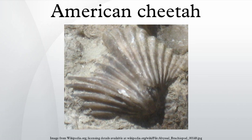The American cheetah developed cheetah-like characteristics through convergent evolution, but it is most closely related to the Puma and not to the modern cheetah of Africa and Asia. The supposed American origin of the modern cheetah is thus equivocal. However, it is believed to have evolved from cougar-like ancestors, whether in the Old World or the New World. The cougar and M. trumani are believed to have split from a cougar-like ancestor around 3 million years ago.